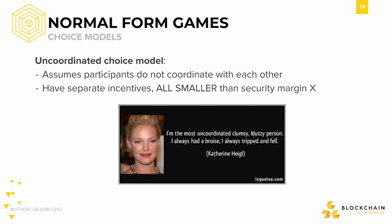In the uncoordinated choice model, actors must make decisions without coordinating with other actors. While each actor will know the incentives and best response strategy of every other actor, actors cannot work together to decide upon their actions. Thus, all the actors in such a game have separate incentives. To motivate correct behavior, a good incentive mechanism would set the security margin to be higher than each of the individual incentives. The fixed collection of actions the players of the game will ultimately take is known as the Nash equilibrium — the state from which no actor can change their action to receive a better outcome.